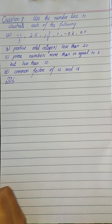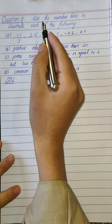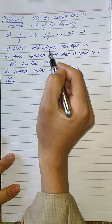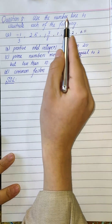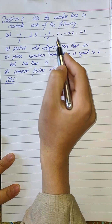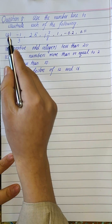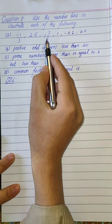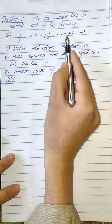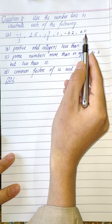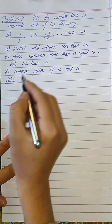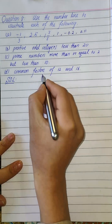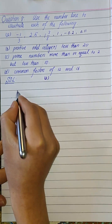Question number 8 from Exercise 2a: use the number line to illustrate each of the following. In this question we have to use the number line to show these values. In part (a) we have: minus 1 divided by 3, 2.5, 1 and 3 over 8, 1, minus 0.2, and 0.11.